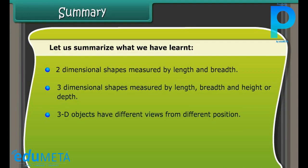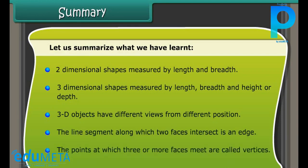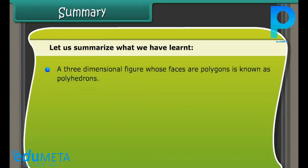The line segment along which two faces intersect is an edge. The points at which three or more faces meet are called vertices. A three-dimensional figure whose faces are polygons is known as a polyhedron. Both prisms and pyramids are named after their bases.